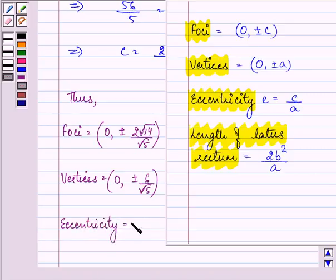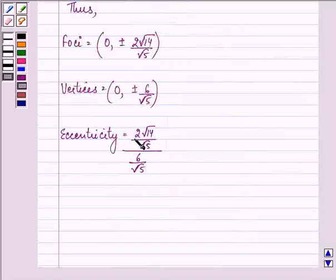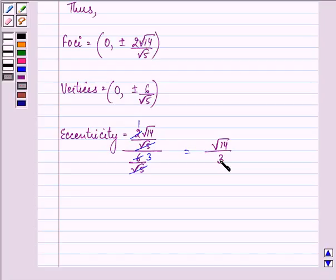Eccentricity is c/a. So it will be (2√14/√5) divided by (6/√5). Let us simplify it further. So we have the answer as √14/3.